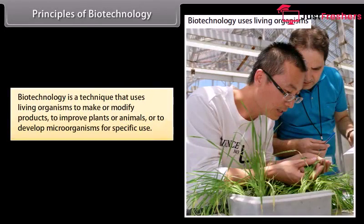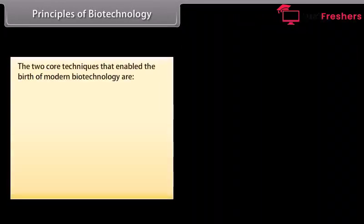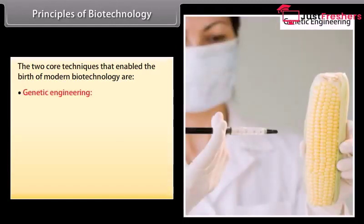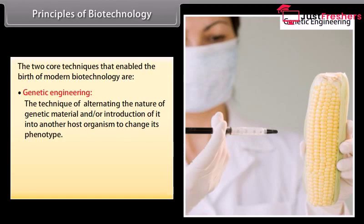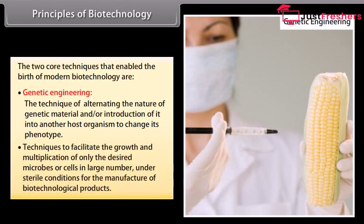Principles of biotechnology. Biotechnology is a technique that uses living organisms to make or modify products to improve plants or animals or to develop microorganisms for specific use. The two core techniques that enable the birth of modern biotechnology are genetic engineering — the technique of altering the nature of genetic material and/or introduction of it into another host organism to change its phenotype — and techniques to facilitate the growth and multiplication of only the desired microbes or cells in large number under sterile conditions for the manufacture of biotechnological products.